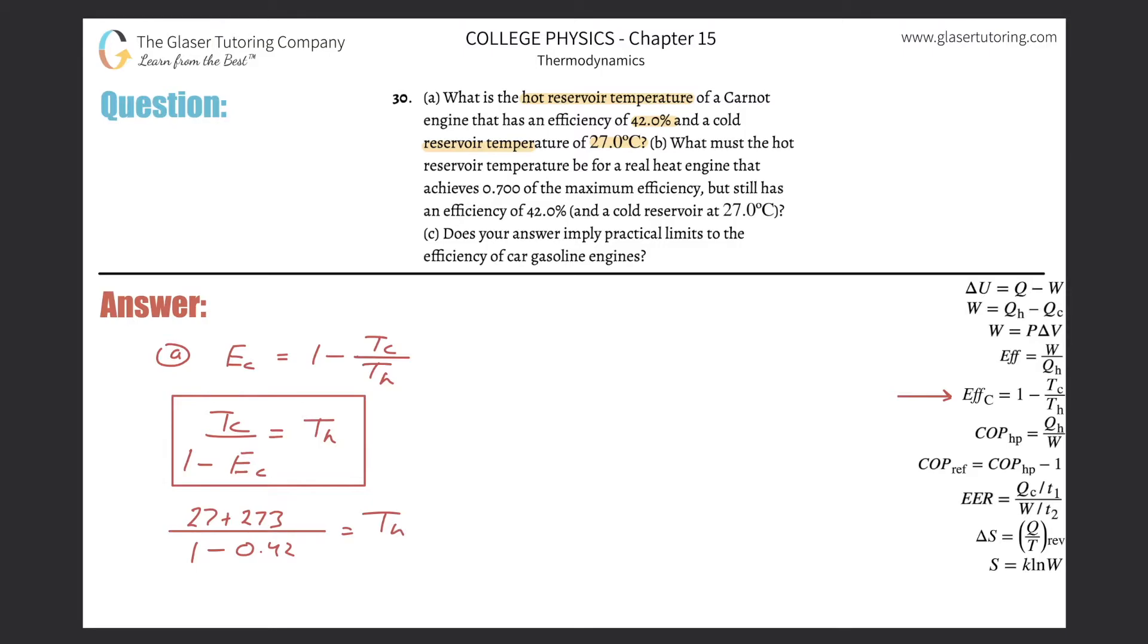And now voila, all we need to do is just calculate. So this is 27 plus then 273 divided then by 1 minus 0.42. And here is about 517, so there's about 517 Kelvin. That will be equal to then the temperature of the hot reservoir. That is an answer. If you need it in Celsius, just subtract 273 from that.